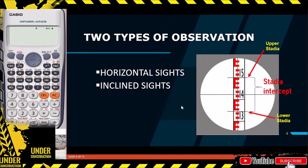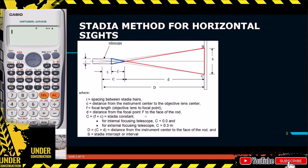Now for the Stadia method for horizontal sights, let us identify the following terms and parts of the Stadia setup. We have small letter i, which is the spacing between the Stadia hairs. Then small letter c, known as the distance from the instrument center to the objective lens center — that is what we call small letter c. Then we have the focal length f.